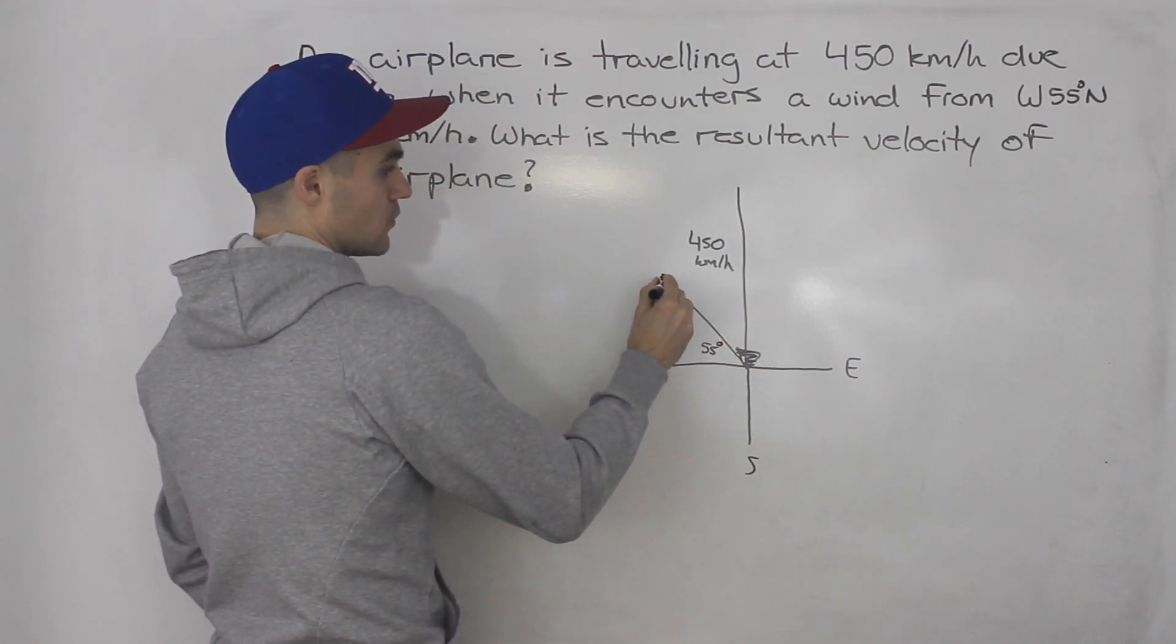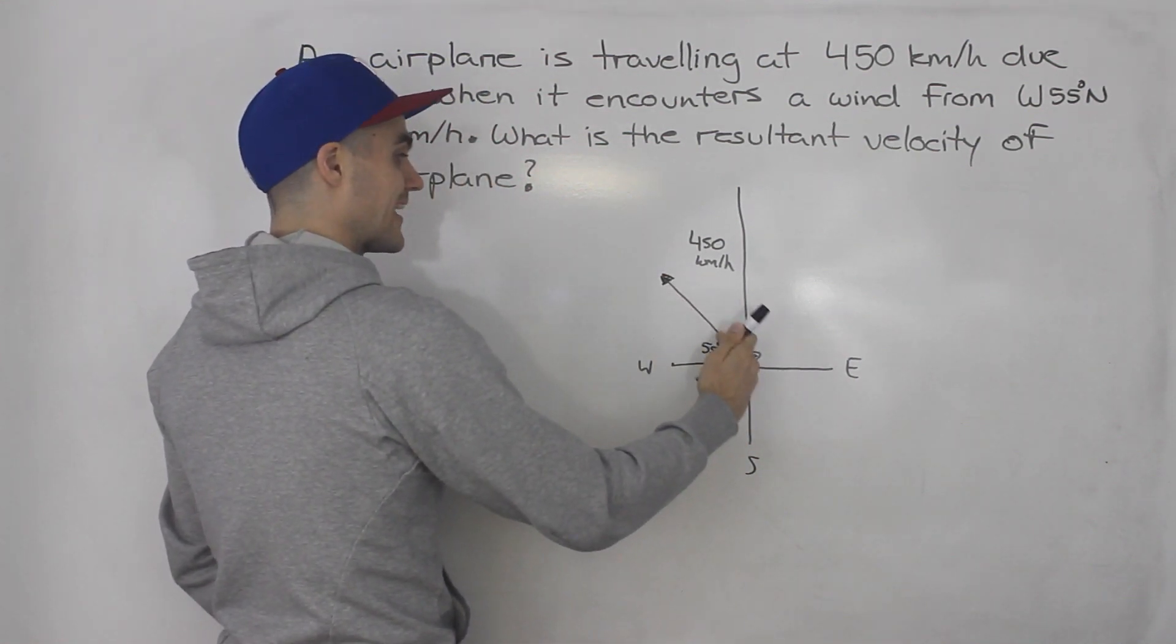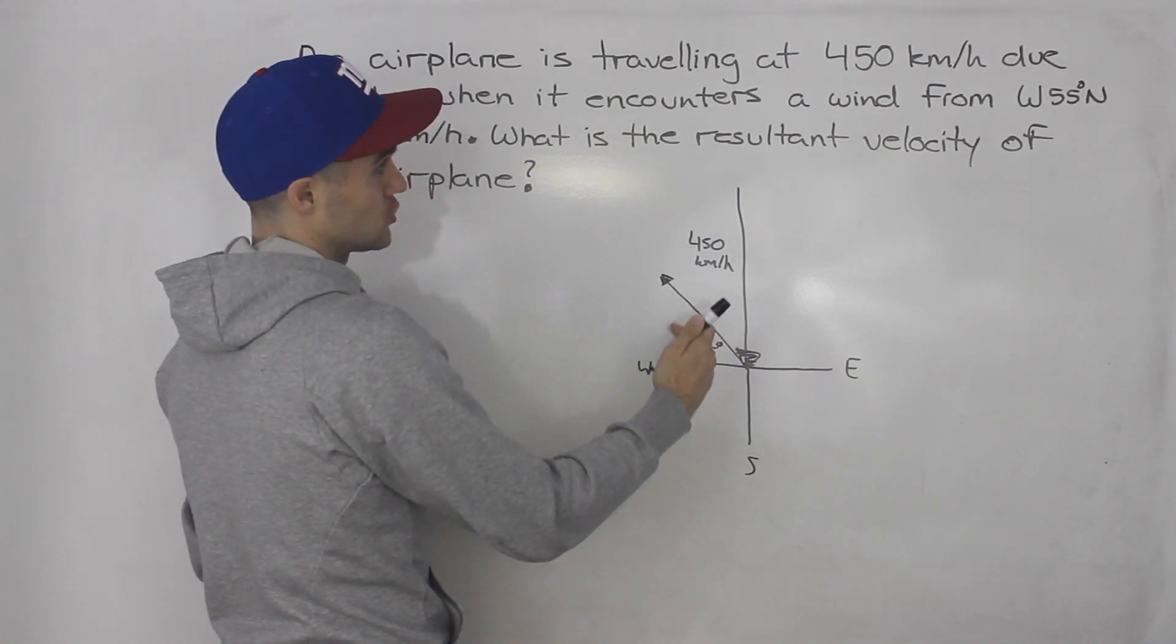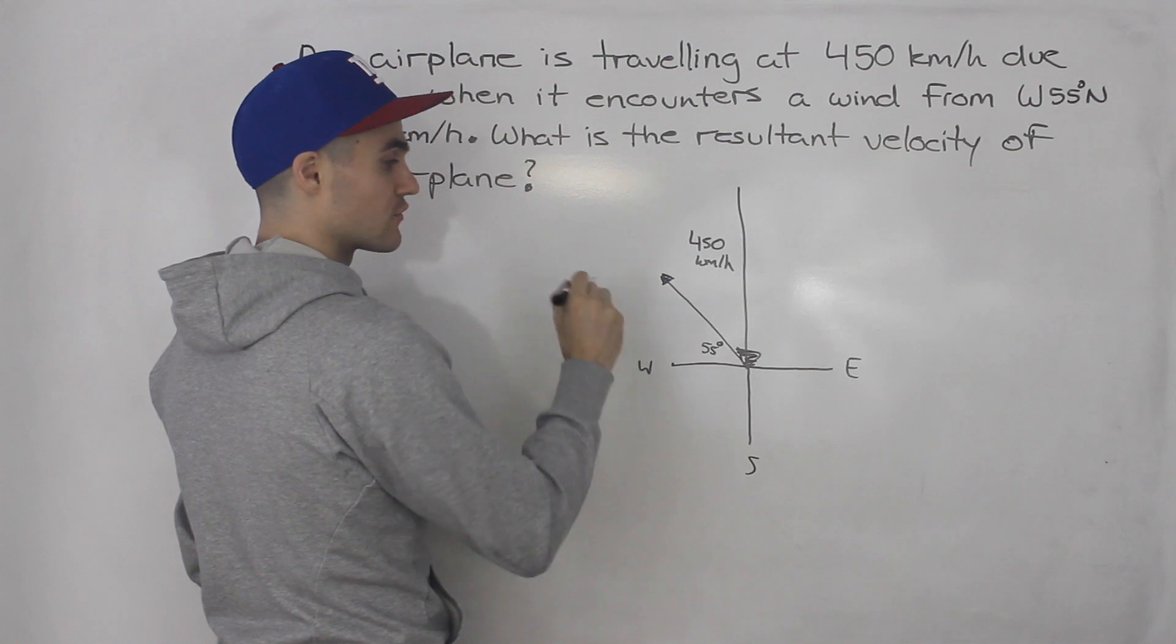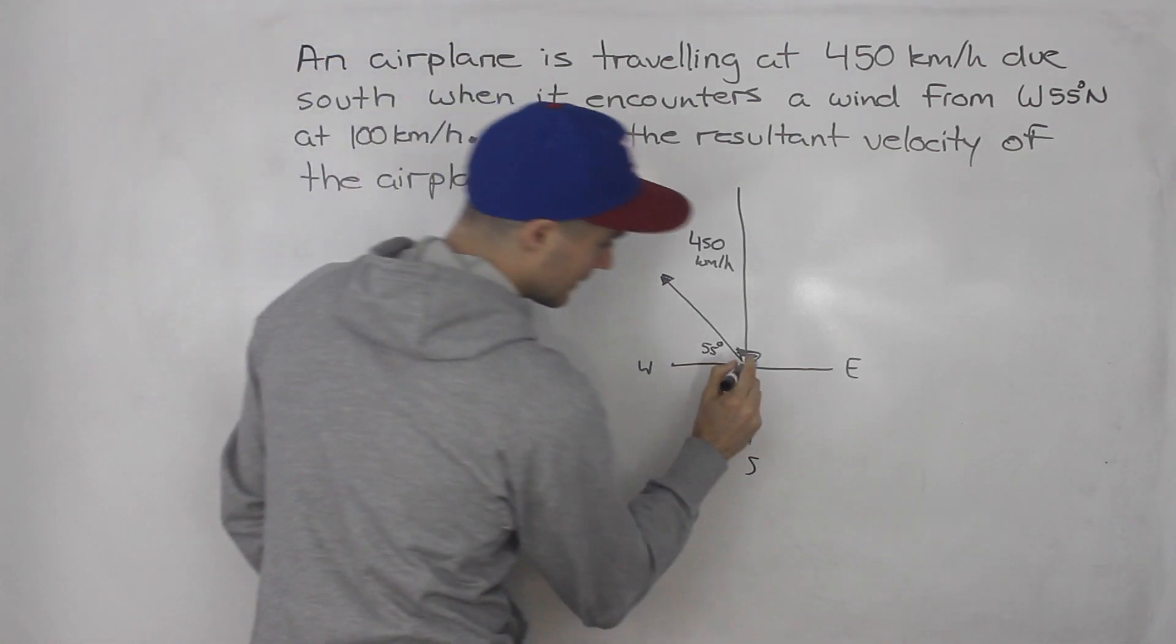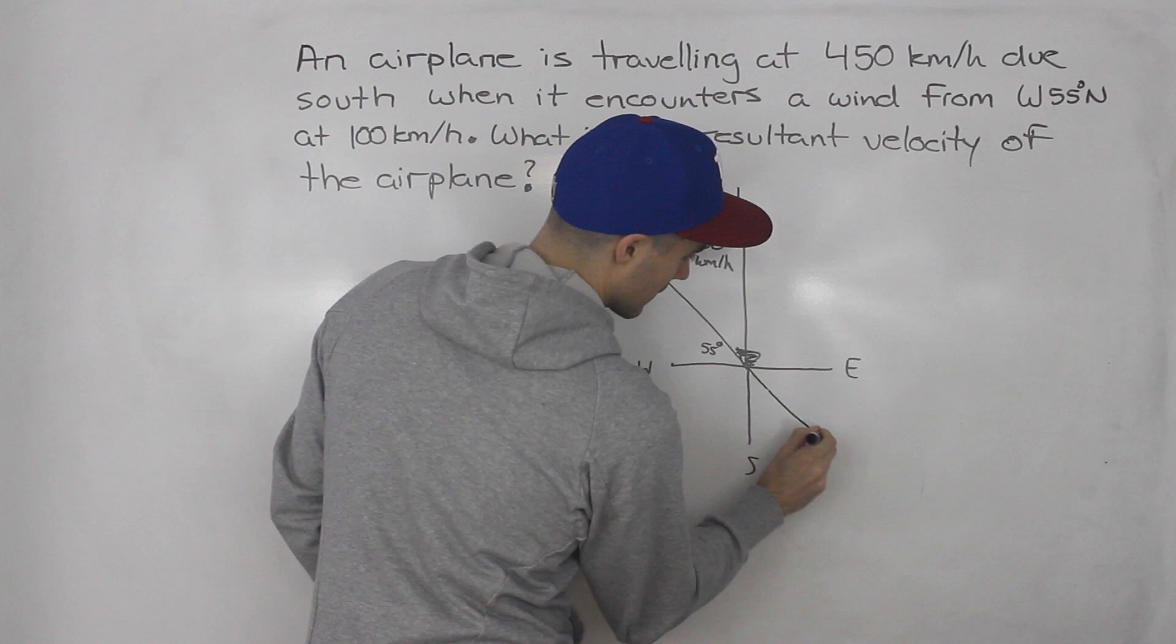Now this would be if the wind is going in that direction towards west 55 degrees north, but it's coming from there, so it's going in the exact opposite direction, so it's going this way.